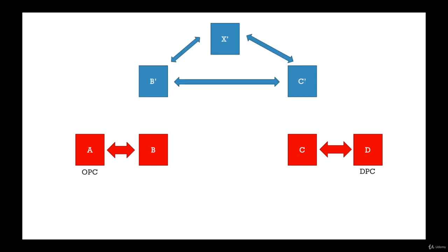The national routing example can be compared to normal local or STD calling, whereas international point codes come into picture when the call is an ISD call. In that case, the destination point code has to be in another country. Suppose this was an international call and B and C were not directly connected via the national network — then it has to go via international point code, so the international SS7 network comes into picture. You can consider the international SS7 network to be similar to a connected set of countries, for example the United States, Canada, Mexico, and Brazil — they have their own SS7 networks.